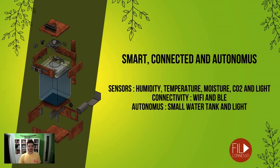Smart, because Terra is equipped with multiple sensors, including air and soil humidity sensors, temperature sensors, external humidity and temperature sensors, light level sensor, and CO2 sensor. With the acquisition of this data, Terra can implement various control algorithms and find the best formula for your ecosystem.